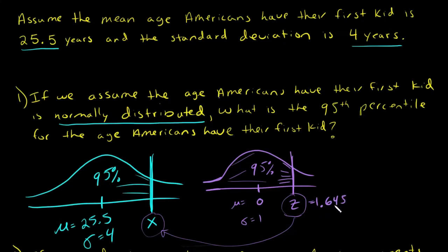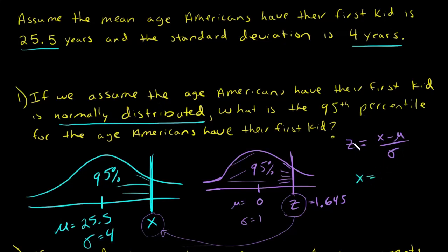Halfway between 1.64 and 1.65 is 1.645, so that will be the z value I'm going to use. My table didn't have exactly 0.95 but had those two numbers close to it, so I'm going halfway between and using z equals 1.645. Now, to figure out what x is, there's the equation z equals x minus mu divided by sigma. Using algebra to rearrange and solve for x — multiply both sides by sigma and add mu — gives x equals mu plus z times sigma.